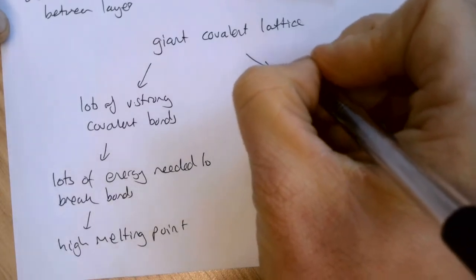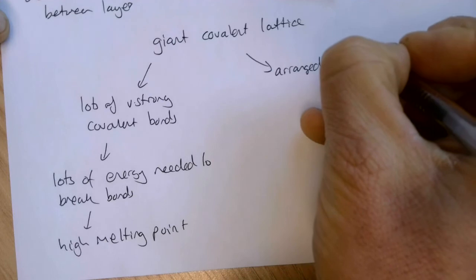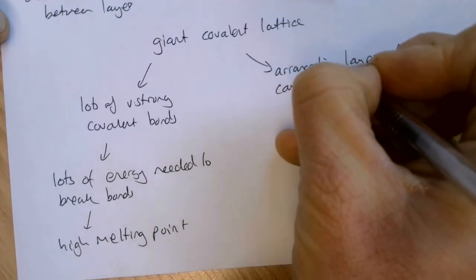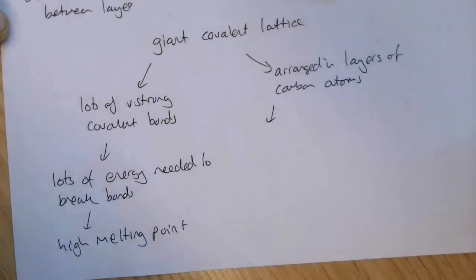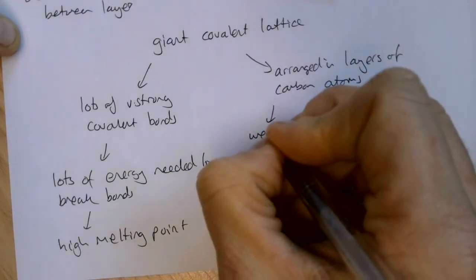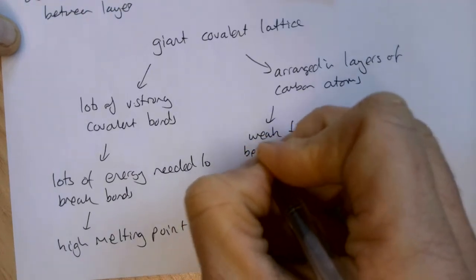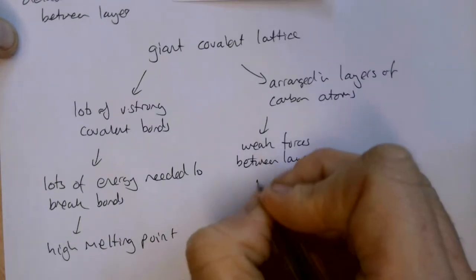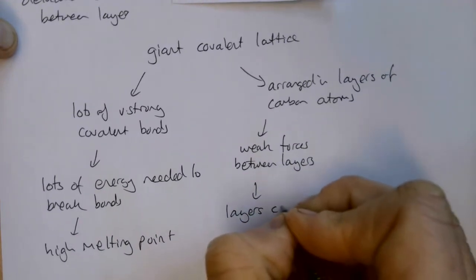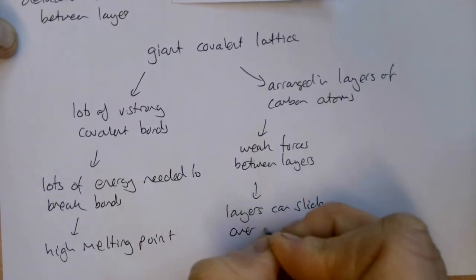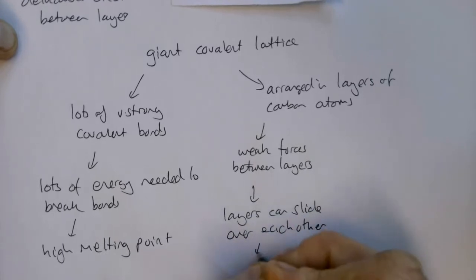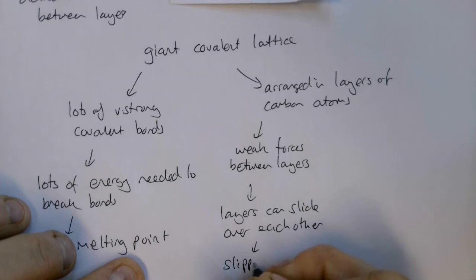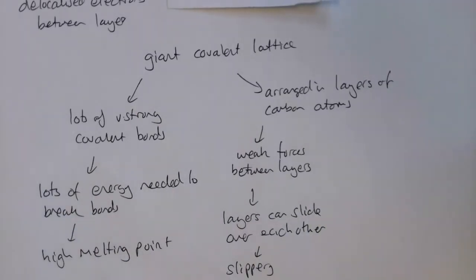What we also need to think about is what the layers mean. There are layers of carbon atoms, and there are weak forces between the layers. As a result of that, the layers can slide over each other, meaning that graphite is very slippery. In fact, when we use a pencil to draw on a piece of paper, we're sliding layers of graphite off the stick and leaving them on the paper.